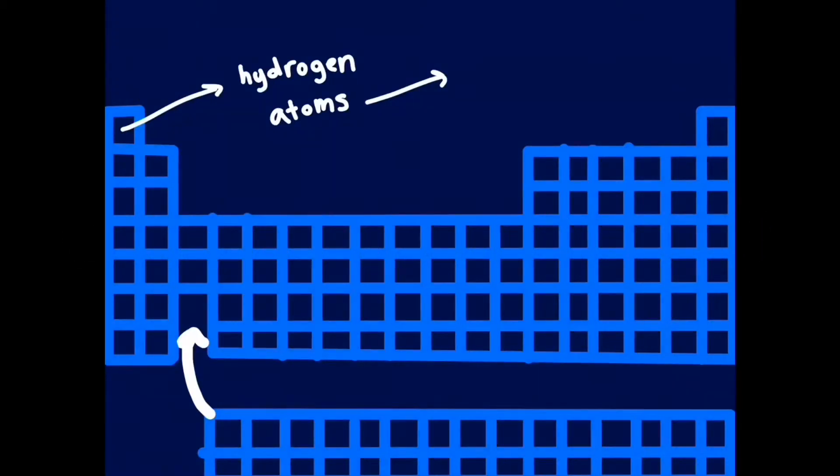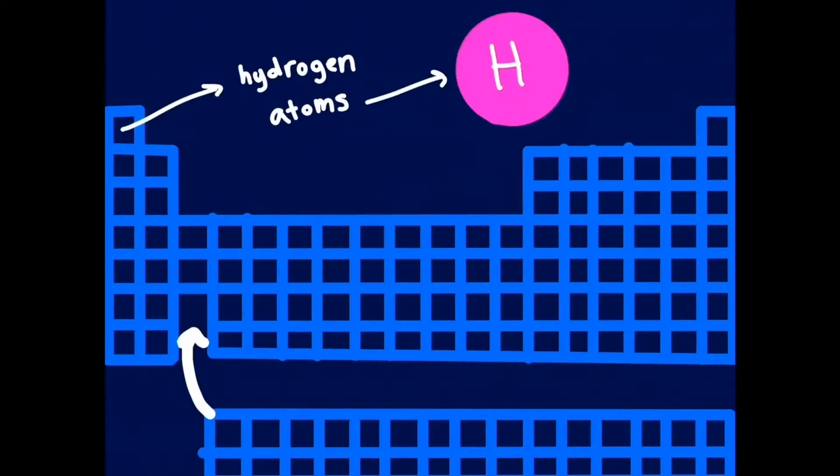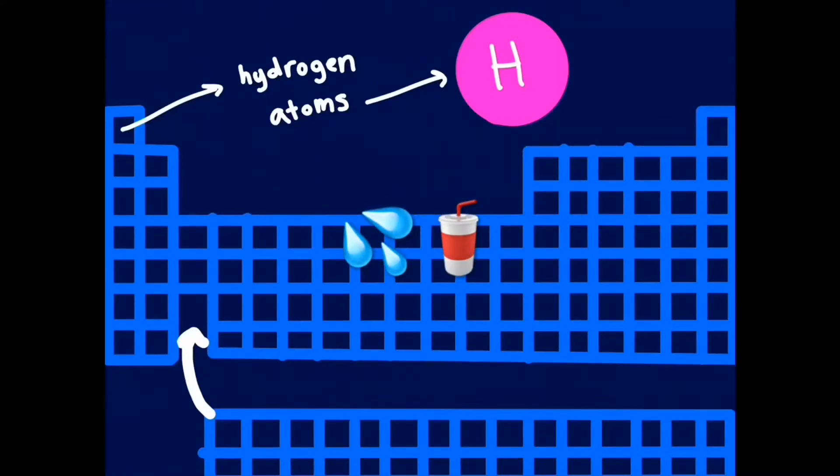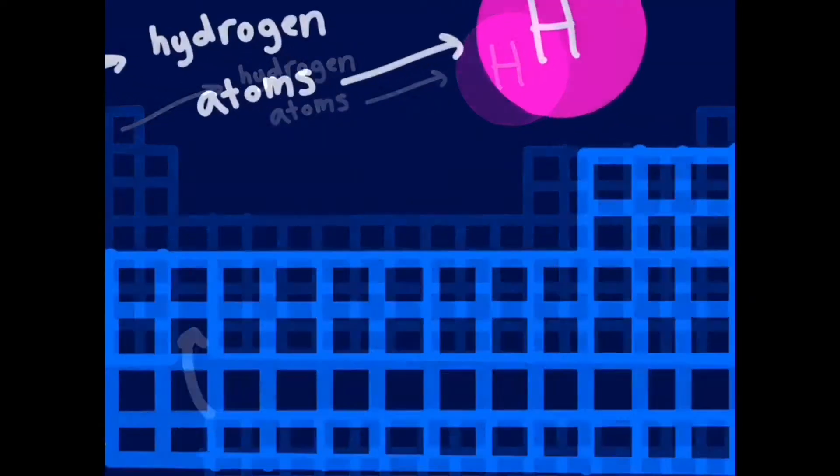He postulated that atoms were indivisible, and though we now know they can be divided, the ideas that elements can mix to form compounds still holds. Things like the water we drink are compounds, because they're made up of combinations of elements. Water is made up of hydrogen and oxygen.